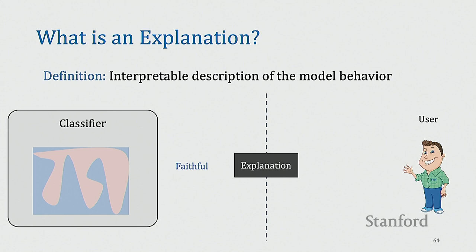The explanation has to have two key properties. The first is the explanation should faithfully describe the behavior of the classifier. If the explanation is not correctly describing model behavior, then it's not useful even if it is interpretable to the user. The other side is whatever we are producing should be interpretable to the end user. The complexity in this scenario comes from what exactly we mean by understandable to the end user, which depends on whether they are machine learning experts, domain experts, and so on.